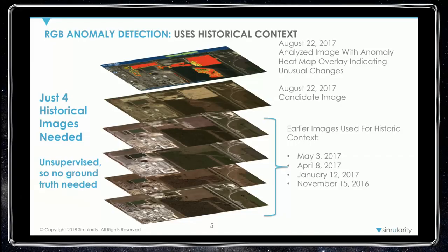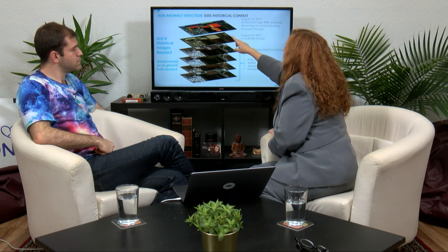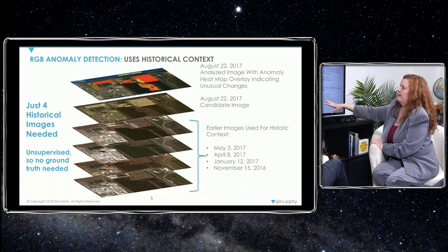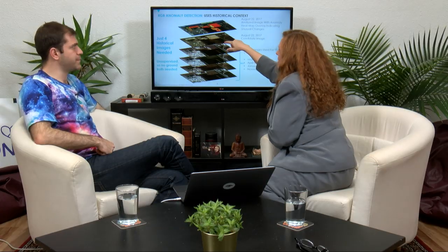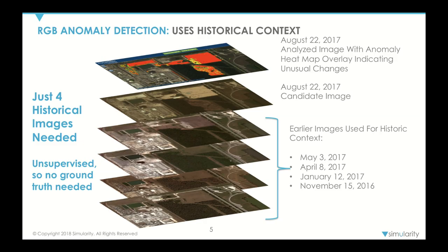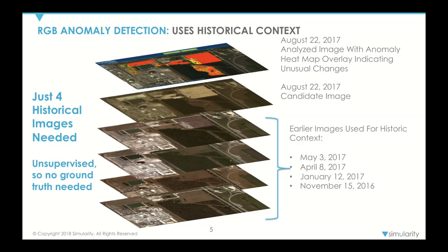Typically change detection looks at two different images and subtracts one from the other to show what's different. What we do is look at historical images and create a predictive model of what it should be. Here we have four images — November, January, April, and May of the same area. We get a new candidate image and compare it to historical images: are there any differences? Based on the predictive model we highlight changes in red — an anomaly heat map laid over the current image. The color of grass changes, reflections change — we learn that's normal.